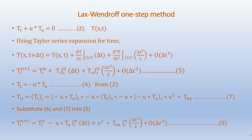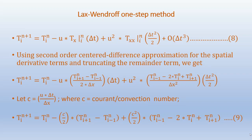When we apply second-order centered difference approximations for the spatial derivatives T_x and T_xx and truncate the remainder terms, we get: T_i^{n+1} equals T_i^n minus u*(T_{i+1}^n minus T_{i-1}^n)/(2Δx)*Δt plus u²*(T_{i-1}^n minus 2*T_i^n plus T_{i+1}^n)/Δx²*Δt²/2. Letting c equal u*Δt/Δx (the Courant or convection number), this simplifies to: T_i^{n+1} equals T_i^n minus c/2*(T_{i+1}^n minus T_{i-1}^n) plus c²/2*(T_{i-1}^n minus 2*T_i^n plus T_{i+1}^n).